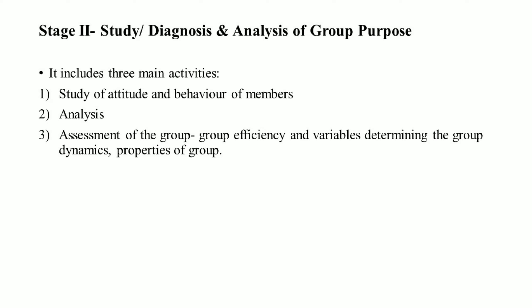Stage two is study or diagnosis and analysis of group purpose. It includes three main activities: first, study of attitudes and behavior of members; second, analysis; and third, assessment of the group — assessing group efficiency, variables determining group dynamics, and properties of the group.